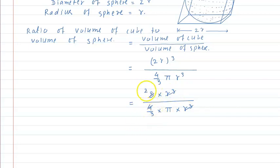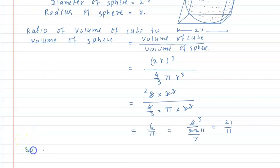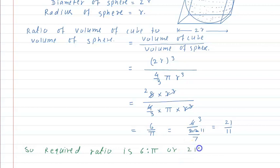R³ cancels with R³. Then 4 and 8 cancel — 8 divided by 4 is 2 — and 2 multiplied by 3 gives 6 upon π. So the answer is 6 upon π. Substituting π = 22/7, we get 6 divided by (22/7), which simplifies to 21 upon 11. So the final answer: required ratio is 6 : π, or 21 : 11.